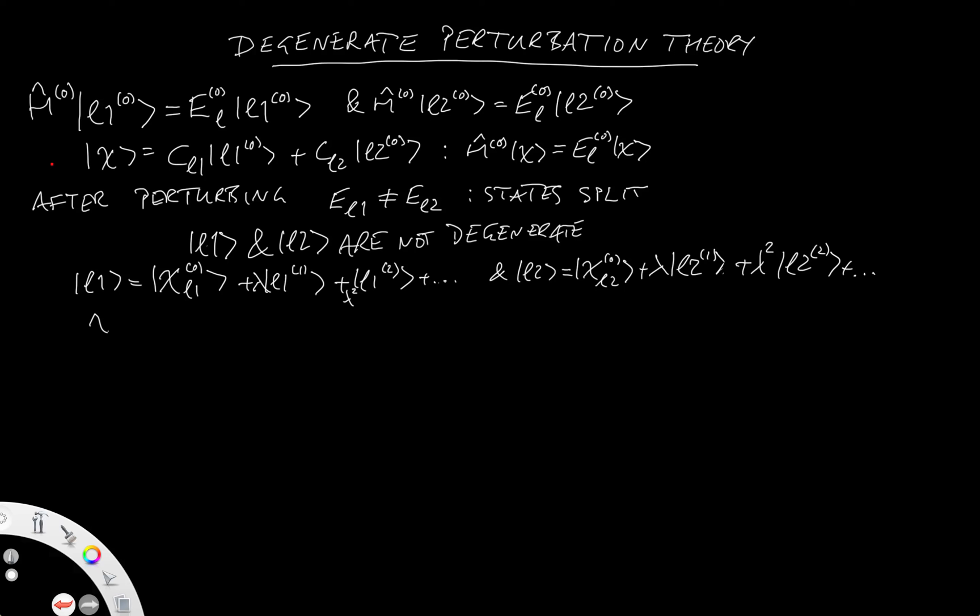And the point is that as lambda turns to 0, in other words, as we remove the perturbation, we need to know the starting states. And there is only one set of starting states that are valid. So we need to know chi_L1 of 0 and chi_L2 of 0. So that's essentially what the degenerate perturbation theory does, is it works out what the appropriate linear combinations are.